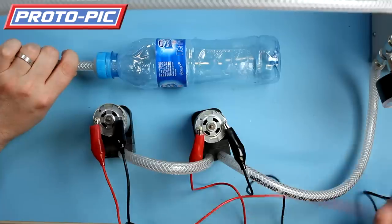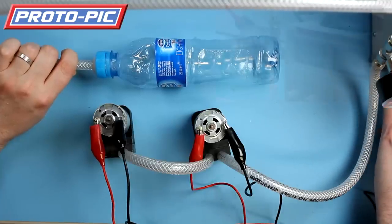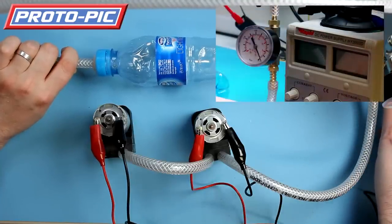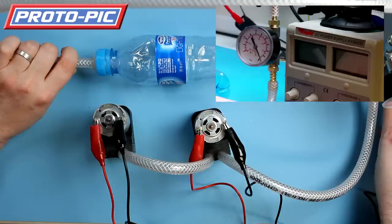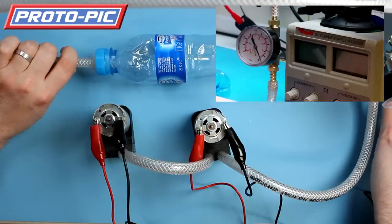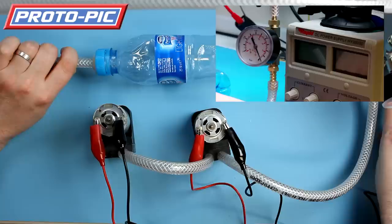We're going to time it from when I switch the power on to when this bottle is fully crushed. Hopefully, you can see the size of the bottle—it's a 50-cent-a-liter bottle. Here we go: three, two, one.